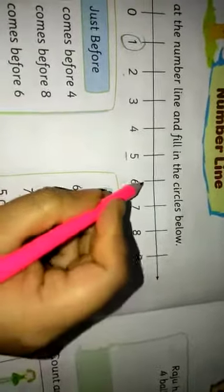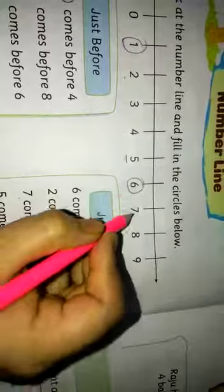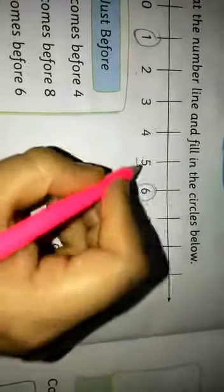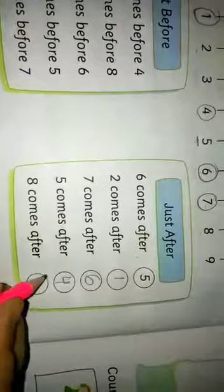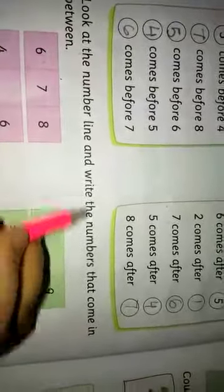7 comes after 6. 5 comes after 4. 8 comes after 7. Look at the number line and write the numbers that come in between.